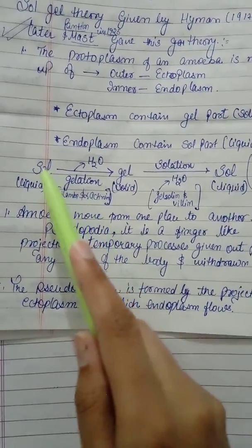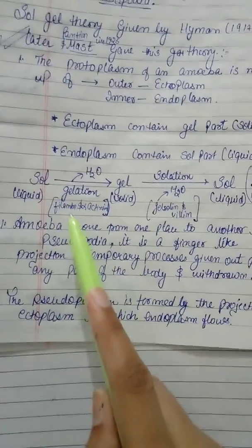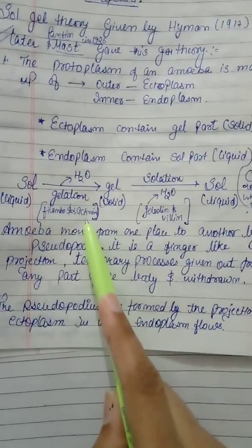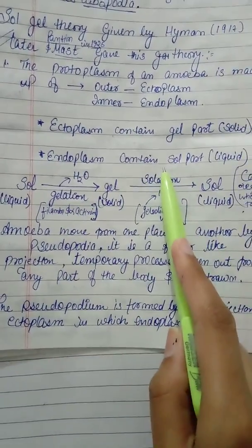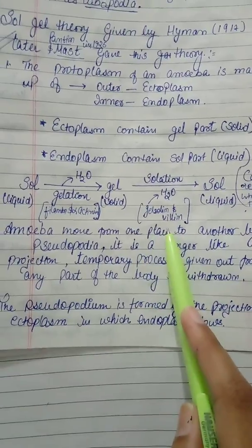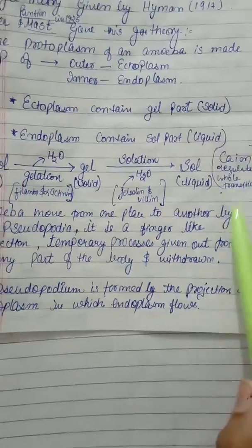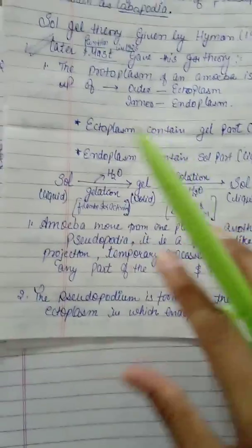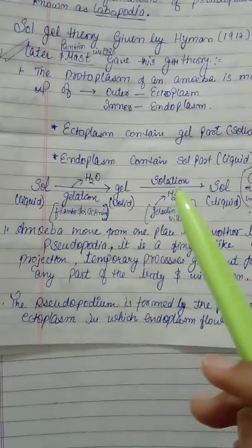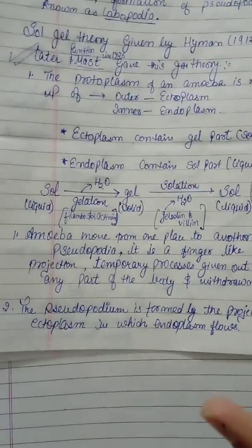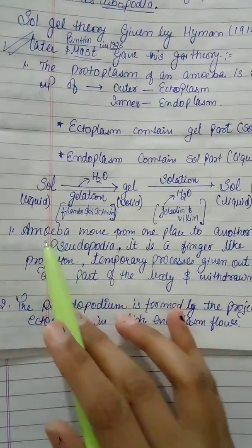There are two types of proteins involved in the formation of gel from sol. The proteins familin and actilin help in the gelation and solation process. Two proteins — bilin and gelsolin — are also involved. Calcium ions also regulate all the transitions. This is basically happening in the protoplasm of amoeba and is controlling all the movement and pseudopodal movements in amoeba.